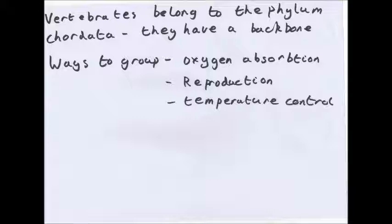Vertebrates belong to the phylum Chordata — they have a backbone made out of vertebrae. Animals that do not have a backbone are invertebrates. Out of the vertebrates there are five main groups: mammals, birds, reptiles, amphibians and fish.